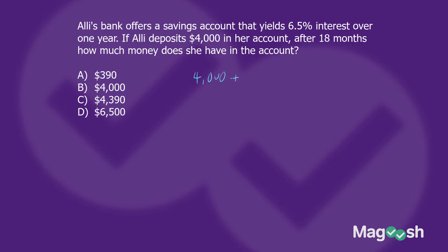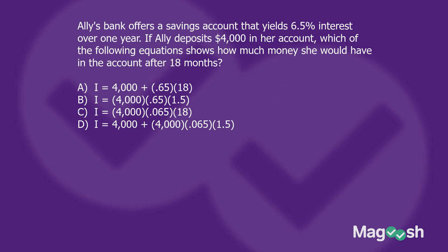Interest equals the original $4,000 times the rate — which in this case is 0.065 — times 1.5, because 18 months is 18 over 12, or 1.5 years. We can multiply this out using a calculator and get $390. So the total is $4,000 + $390, leading us to answer choice C. Notice that answer choice D actually shows the full equation: 4000 + 4000 × 0.065 × 1.5. That is simple interest.